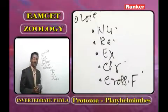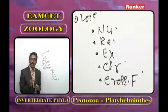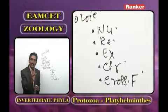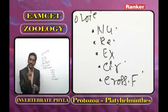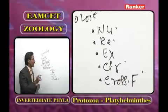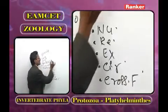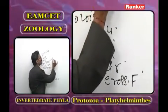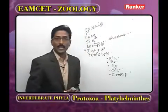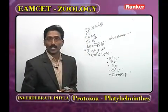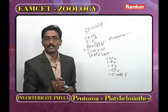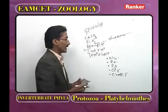In Porifera, water enters the body because of the action of choanocytes — also called collar cells or flagellated cells.